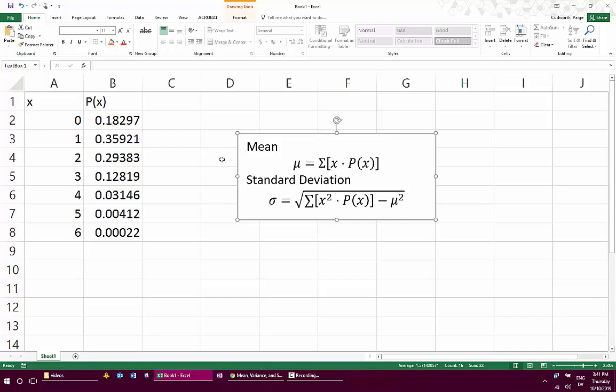So for the mean of the probability distribution, our formula says we need to take the sum, so this is our Greek letter sigma, saying add up x times P(x) for all the possible x's. So in my table I've got in this case seven different x values with their probabilities next to them. And so I'm just going to create a new column next to this that I'm going to call x times P(x).